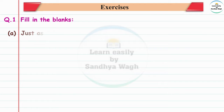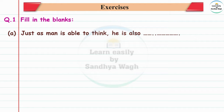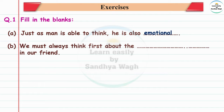Fill in the blanks. First: Just as man is able to think, he is also — dash. The answer is: just as man is able to think, he is also emotional, meaning he is bhavnashil — emotional.